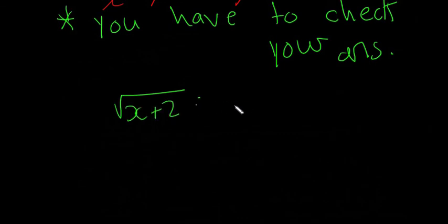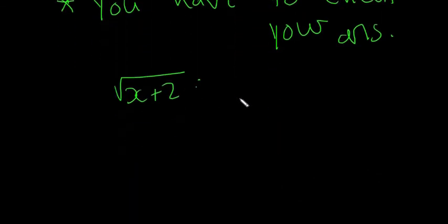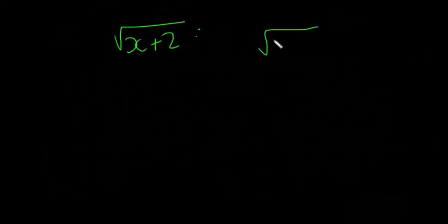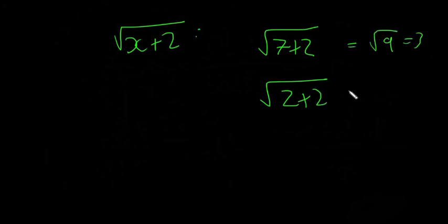But x plus 2, so x equals 7 or x equals 2. So it's either going to be 7 plus 2 in the square root, or 2 plus 2. Both of these are fine. That's going to be square root of 9, which is equal to 3. And this is going to be the square root of 4, which is equal to 2.